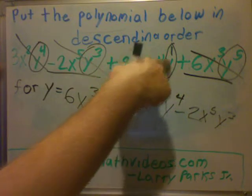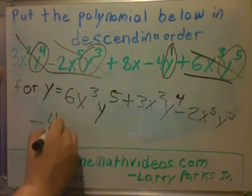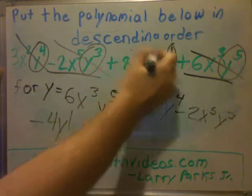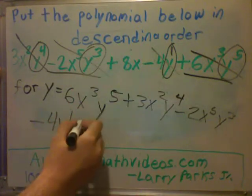And then I got one y, so minus four y to the first. And then here I have no y, so I just put that at the end.